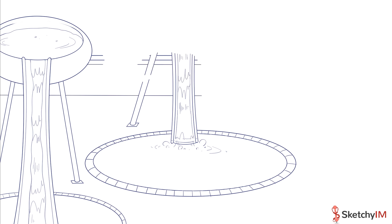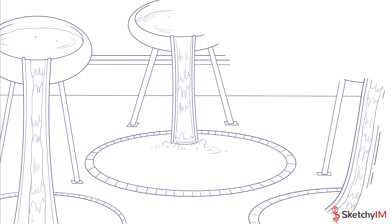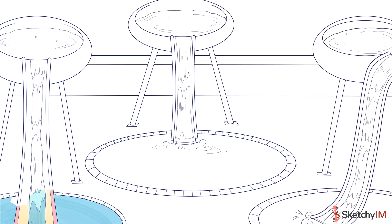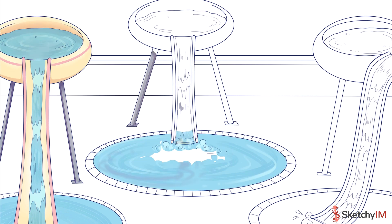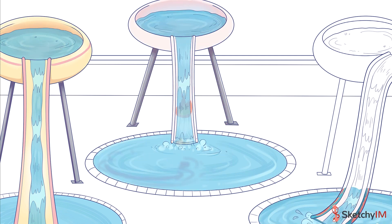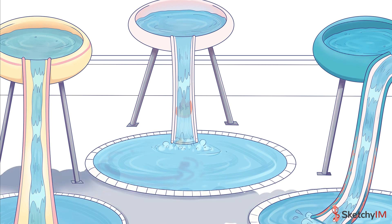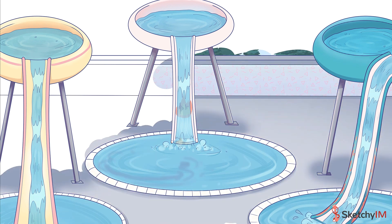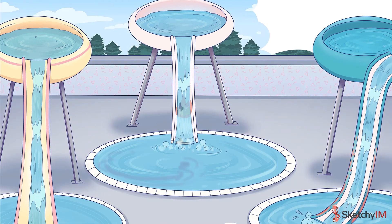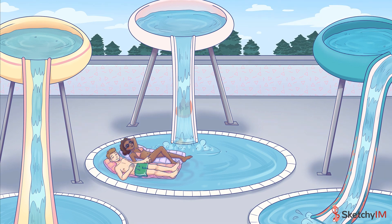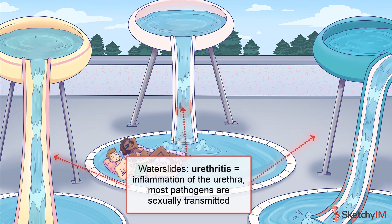It's a beautiful summer day, and our two lovebirds are heading to the water park to cool off. Unfortunately, they must have looked at the wrong map, because they've ended up in what can only be described as the inflamed section of the park. These slides look irritated and red — hey, what's that smell? Are they burning? Urethritis is an inflammation of the urethra, here symbolized by water slides, and in most cases it's caused by a sexually transmitted infection.